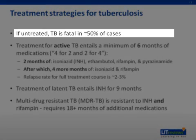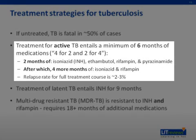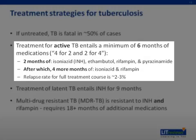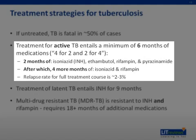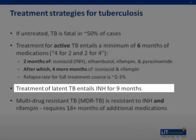When untreated, TB is fatal in approximately 50% of cases. Treatment of active TB entails a minimum of six months of medications. The mnemonic 'four for two and two for four' is helpful to remember that for the first two months, four antibiotics are used: isoniazid, ethambutol, rifampin, and pyrazinamide. After the completion of those two months, an additional four months of treatment includes two antibiotics: isoniazid and rifampin. If a patient completes all six months with good compliance, the relapse rate is extremely low, around two to three percent. Treatment of latent TB, however, requires nine months, although it only requires one antibiotic: isoniazid.